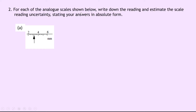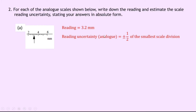Question two says: for each of the analog scales shown below, write down the reading and estimate the scale reading uncertainty, stating your answers in absolute form. For part a we've got a scale in millimetres and it goes up in twos, with 10 little division markings between the 2 and the 4, so each marking represents 0.2 millimetres. Our arrow is pointing to the first one after 3, giving a reading of 3.2 millimetres. The reading uncertainty is plus or minus half of 0.2, which gives plus or minus 0.1 millimetres. Writing this in absolute form: 3.2 ± 0.1 mm.